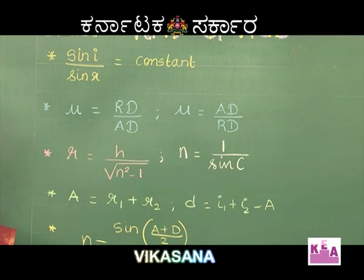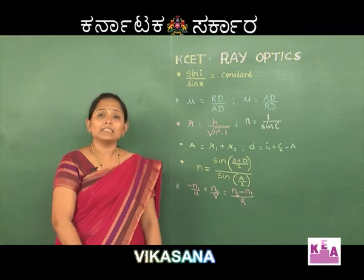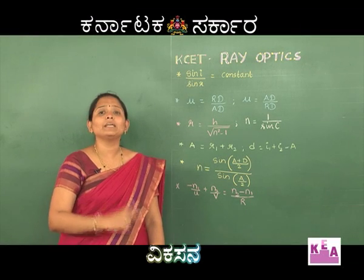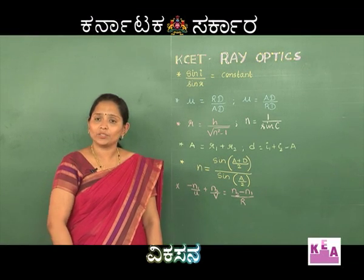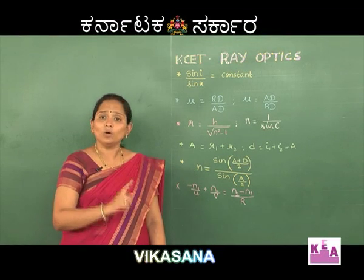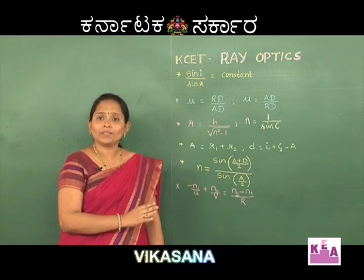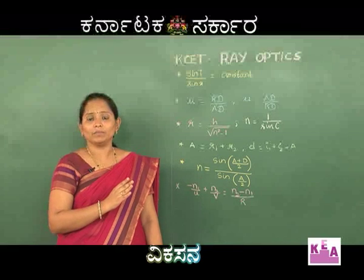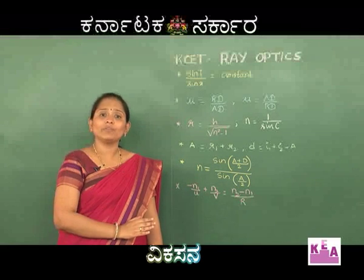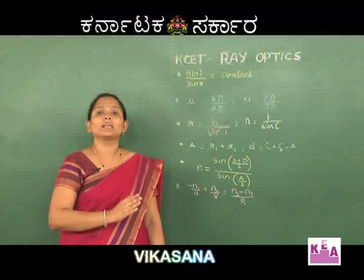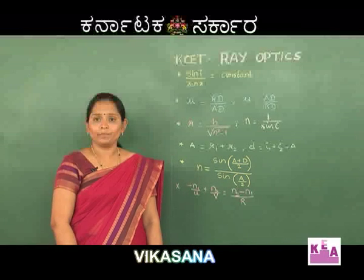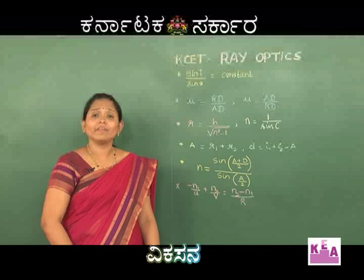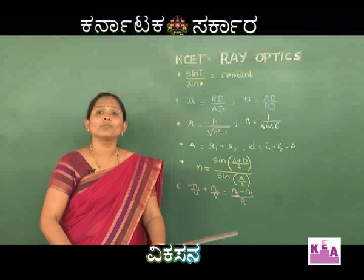Another very interesting concept in refraction of light is total internal reflection. The two main conditions for total internal reflection to take place are: first, the ray of light should travel from a denser medium to a rarer medium; and second, the angle of incidence should always be greater than the critical angle. Let us look into one application regarding TIR — the field of vision of a fish.